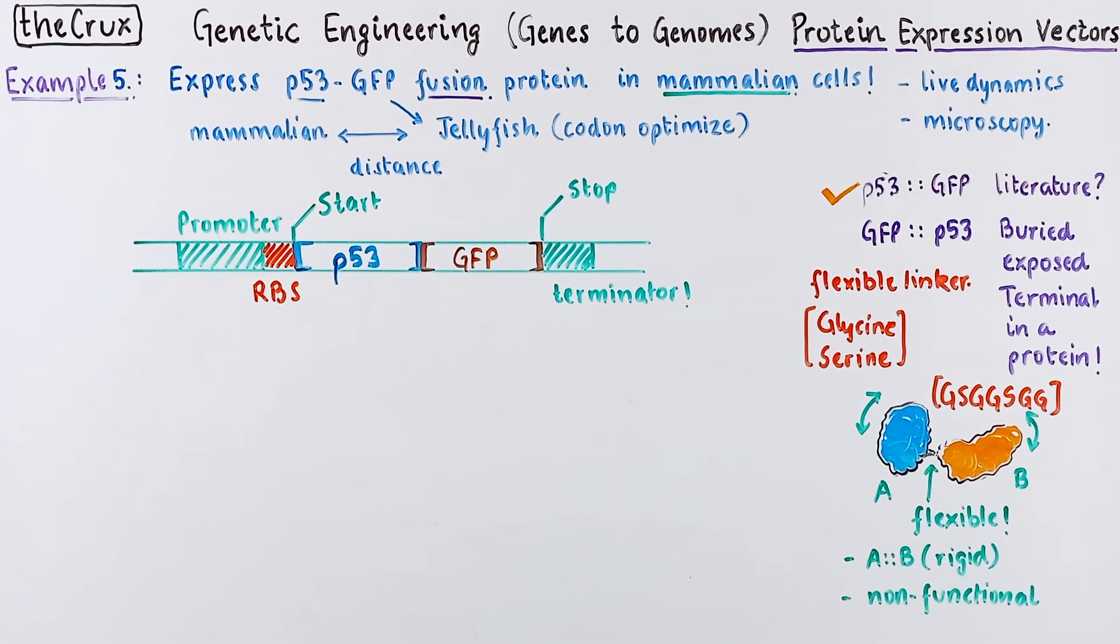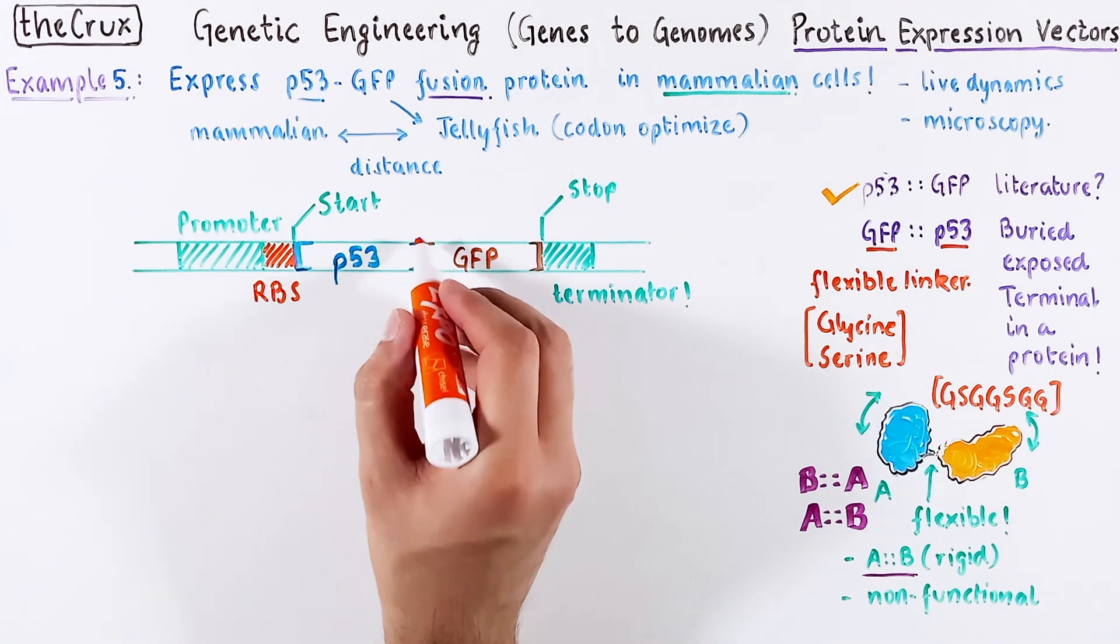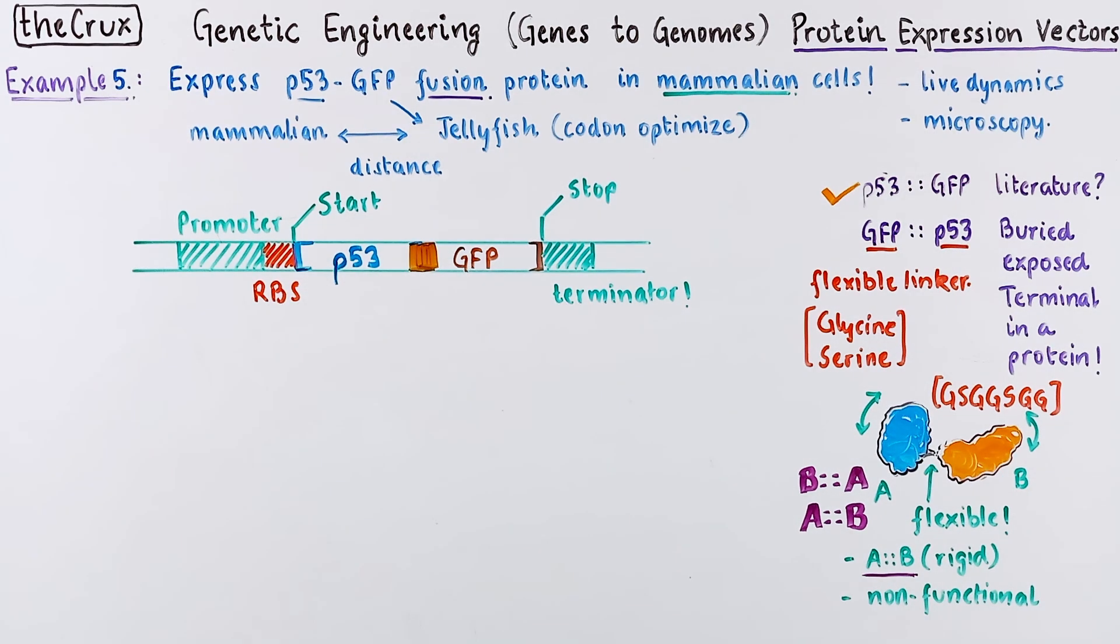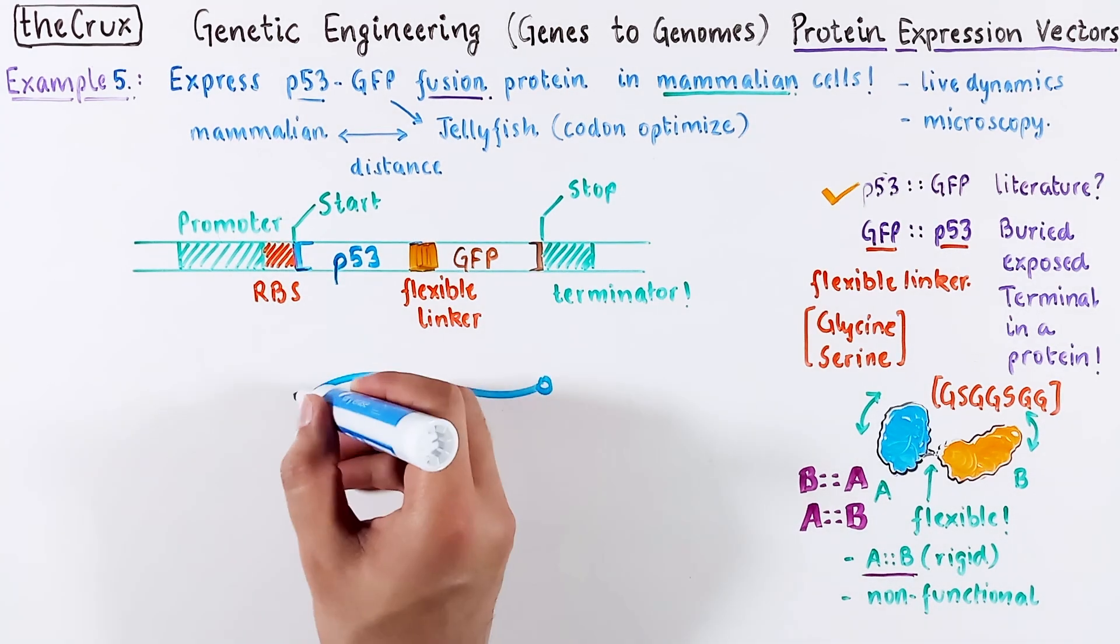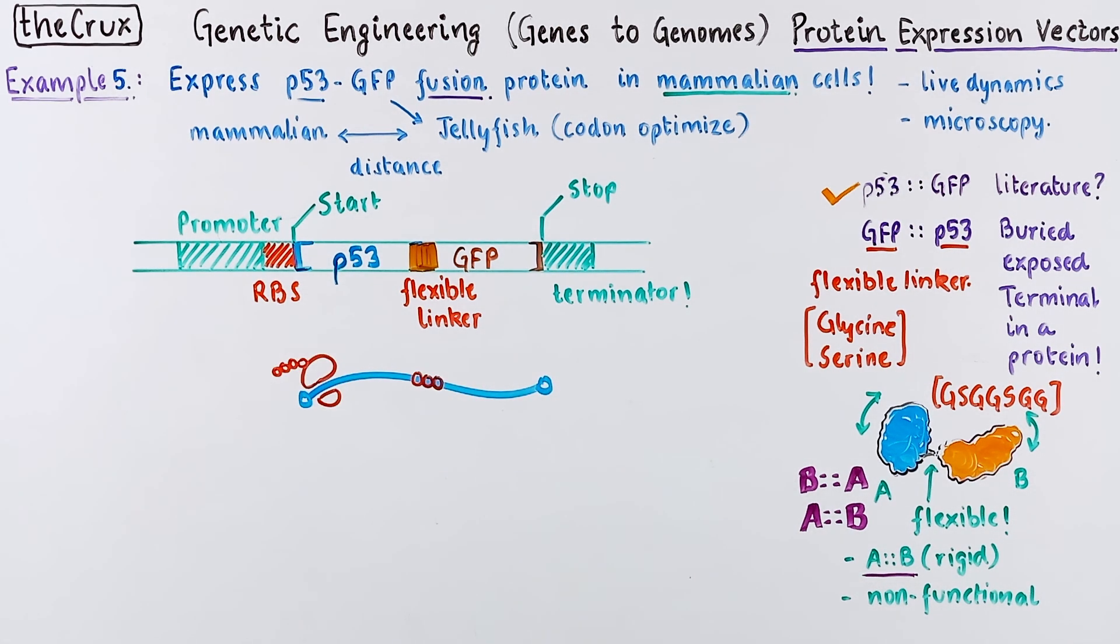People often call it the GS linker. In some odd cases, a rigid linker may be preferred. It depends on your application. The linker typically goes into the ORF, regardless of the fusion orientation. Now, if you fix the architecture, the two protein ORFs are separated by a small linker sequence in the middle. A standard way to add a linker is through primer overhangs. So linkers are good to prevent protein-protein steric hindrance.